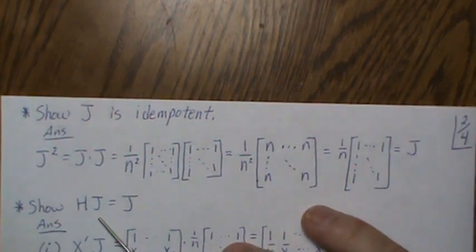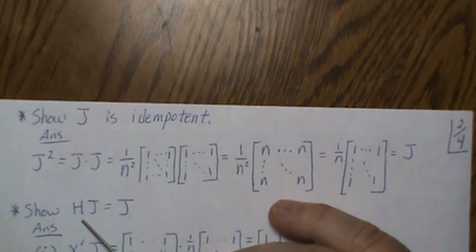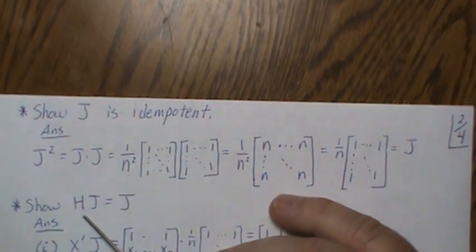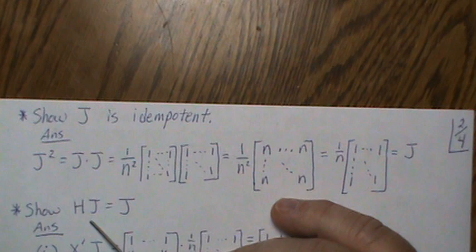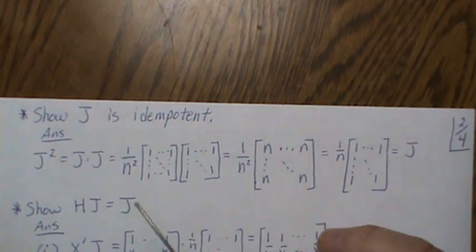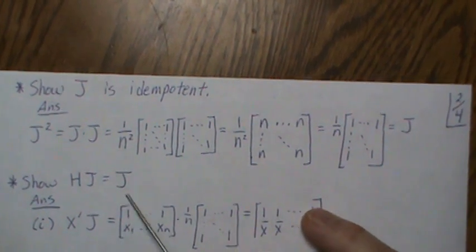We want to show that HJ = J. Later on — probably 20 or 30 videos down the road — we'll talk about H being a perpendicular projection matrix onto the column space of X. Since J is a constant matrix of ones times 1/n, it's actually in the column space of X, so HJ = J will be obvious at that point. But for now let's just prove it by actually doing the multiplication.